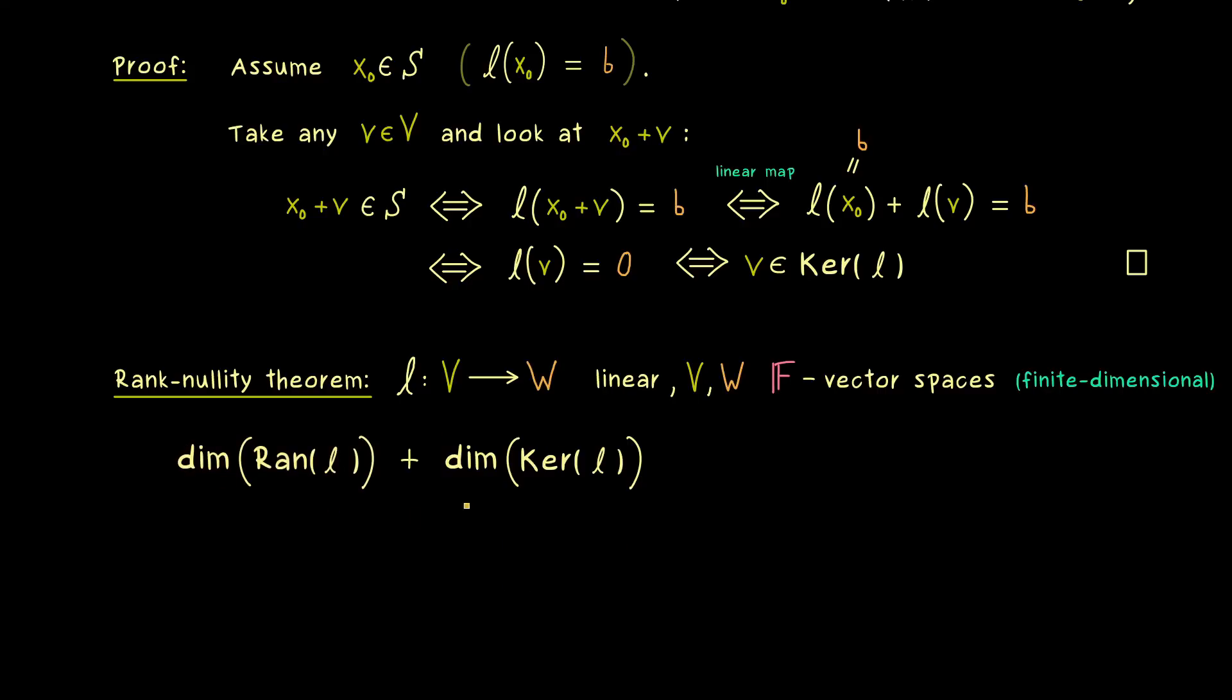So this already explains the name of the theorem, and now the claim is that both dimensions added gives us the dimension of the space we put in. Hence, in our case, it's simply the dimension of the vector space V. Okay, so this is the famous rank-nullity theorem for linear maps, and you definitely should remember that.